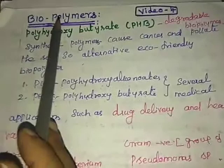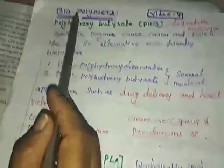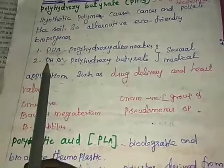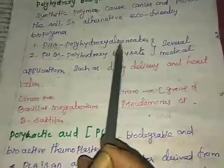Efforts were taken to provide an alternative eco-friendly biopolymers, namely PHA and PHB. PHA stands for polyhydroxyalkanoates. The second one, PHB, polyhydroxybutyrate. These are a group of degradable biopolymers.